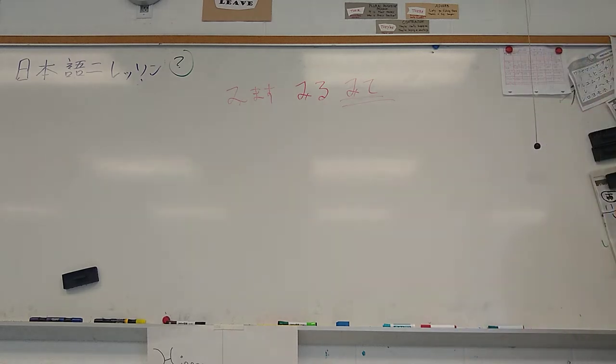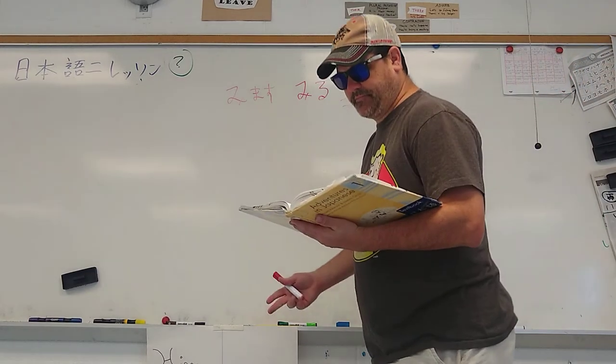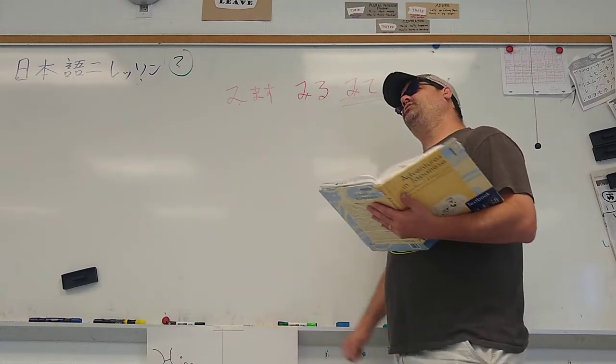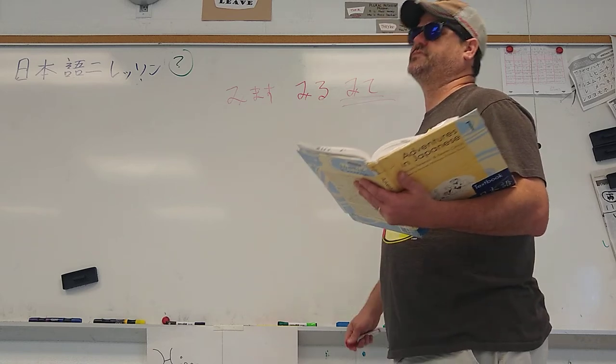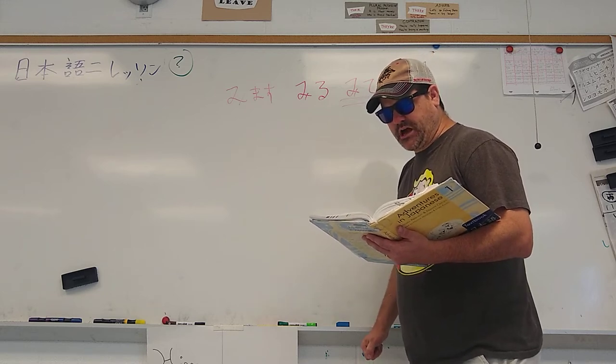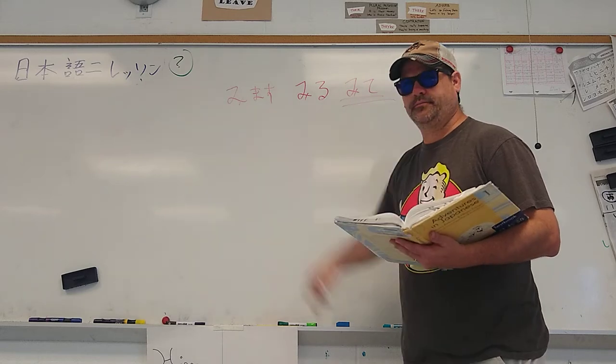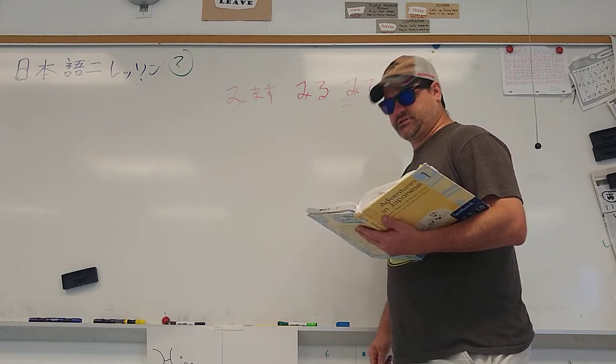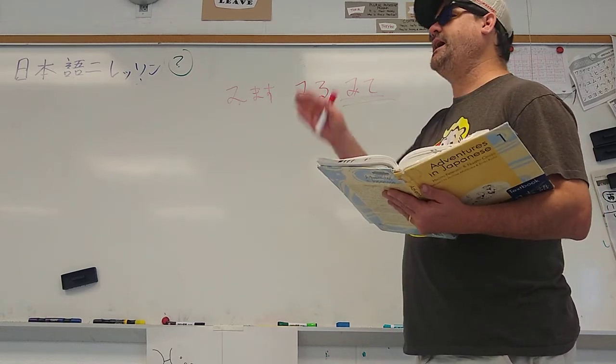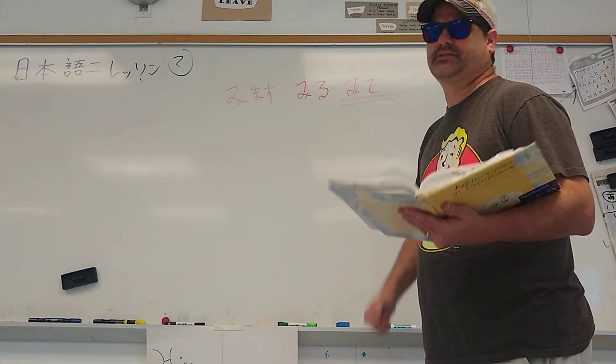So let's see, Ken-san goes, kore kara nani ga arimasu ka? What's going on for now? Emi-san: ichiji kara, eigo no jugiou ga arimasu. They're studying English from 1 o'clock. Ken says, boku wa ima toshokan e itte, shukudai wo shimasu. He's going to go to the library and do homework.